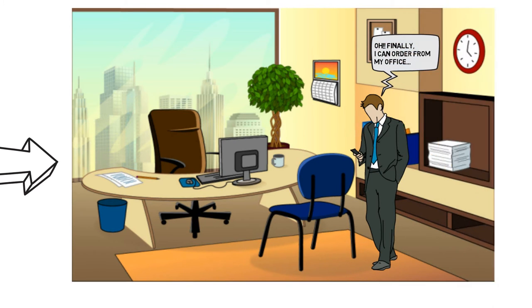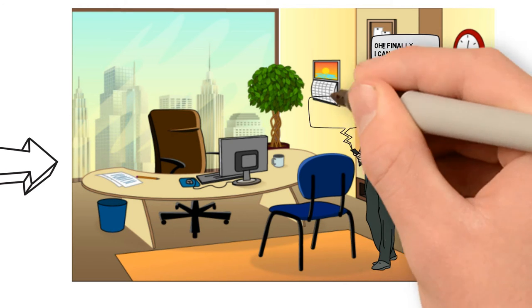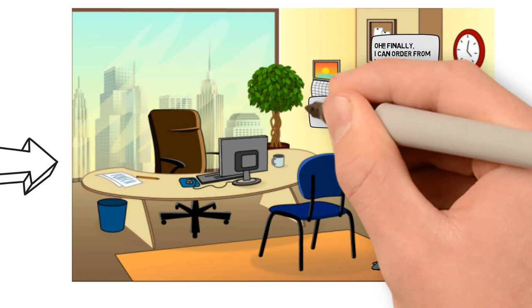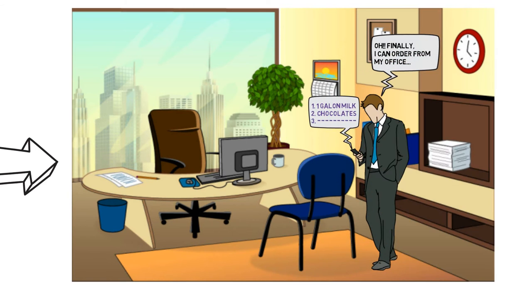Many ways to order. He can type in, scribble, voice order, or take a picture of his handwritten list. He sends an order to the grocery store that he normally shops at.